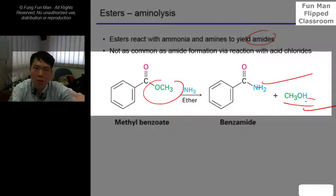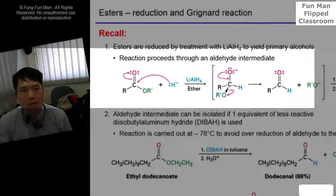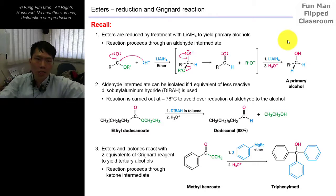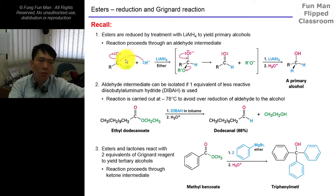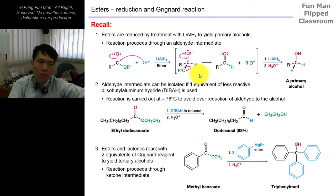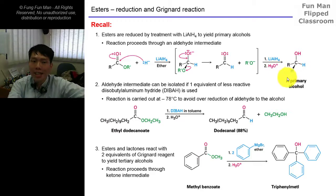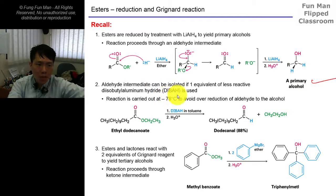Esters can undergo reduction reactions because they have the C=O double bond. It is attacked by the hydride equivalent of lithium aluminum hydride, then undergoes this mechanism via the tetrahedral intermediate species to form an aldehyde intermediate. But we know we cannot isolate this, so the second part repeats the same thing to form the alcohol.